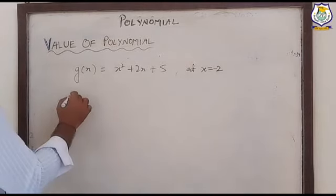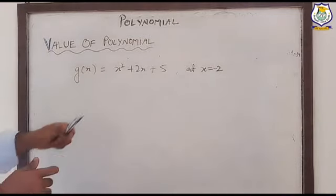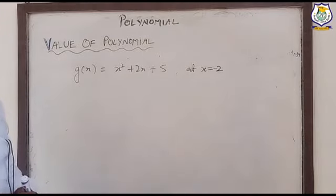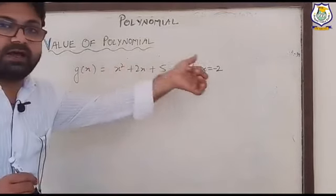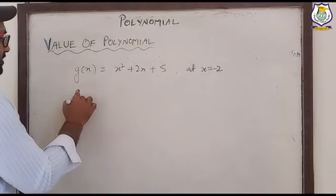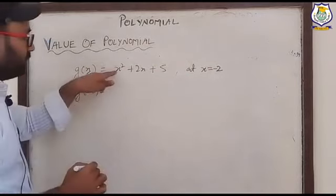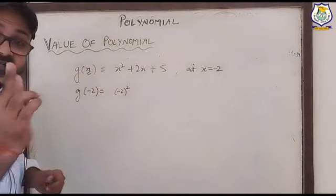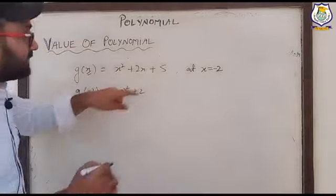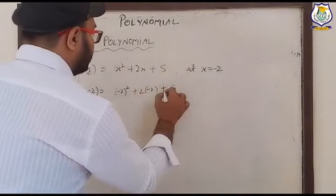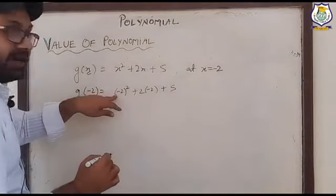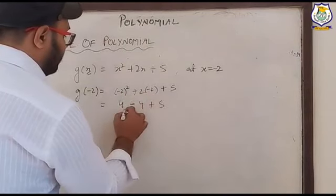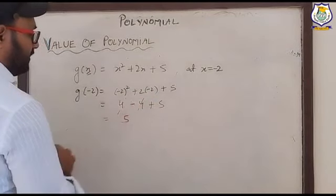What we will do is wherever x appears — I can see x here and x here also — we will replace each x with minus two. So: g(-2) = (-2)² + 2(-2) + 5. The square of a negative number gives a positive result, so we get four minus four plus five. Four and minus four cancel out, giving us five.